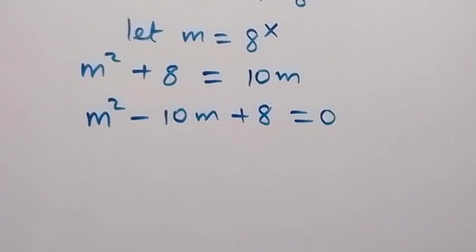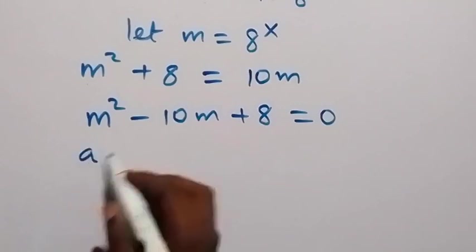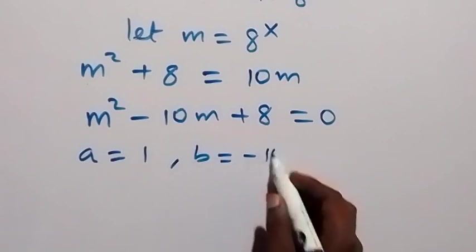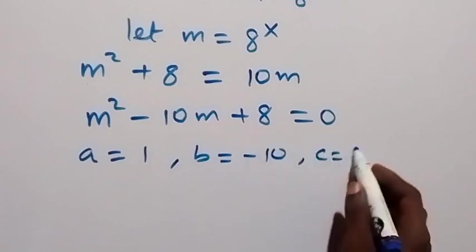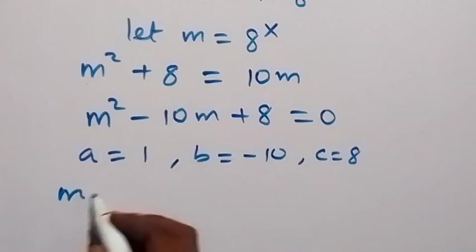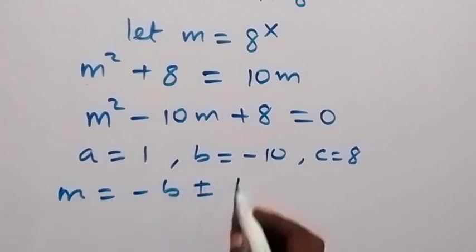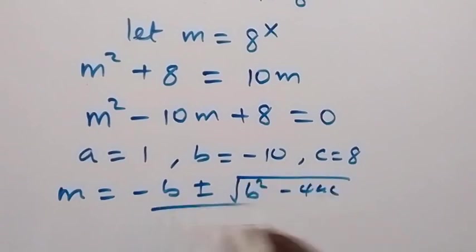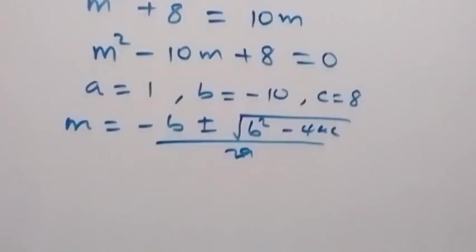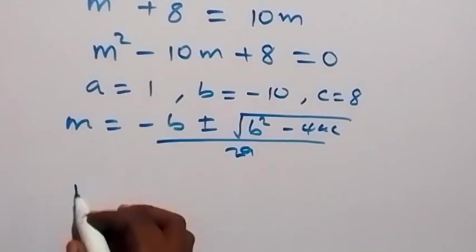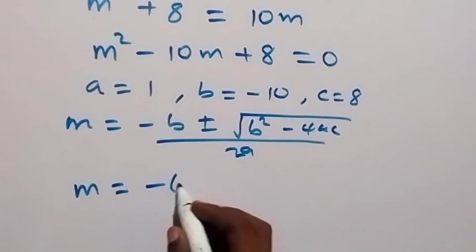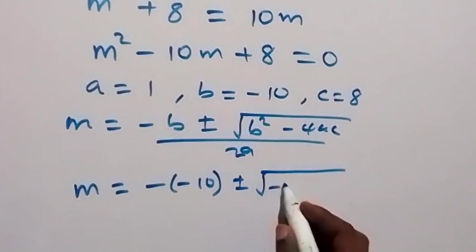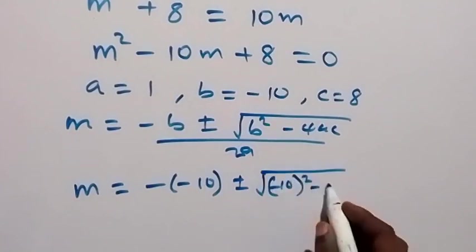We now have a quadratic equation and we solve this using the quadratic formula. Here A equals 1, B equals minus 10, and C equals 8. From the quadratic formula, M equals minus B plus or minus square root of B squared minus 4AC, over 2A. Applying that, M equals minus minus 10 plus or minus square root of minus 10 squared minus 4 times 1 times 8.